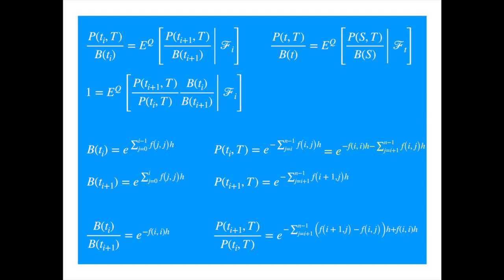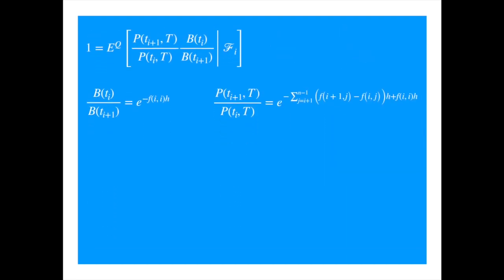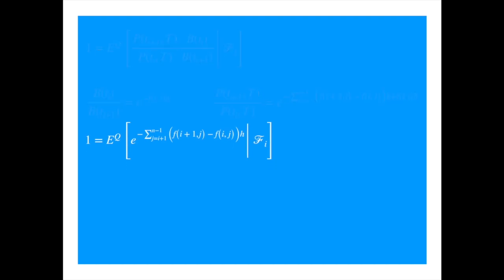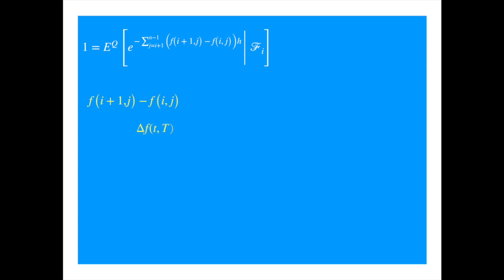Now when we multiply the two ratios, the FII term cancels, and we are left with something that looks like the sum of the increments, which is essentially the discrete time equivalent of the HJM differential, which we know is equal to a drift term plus a volatility term.